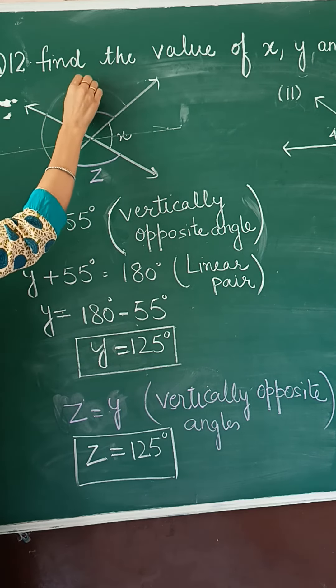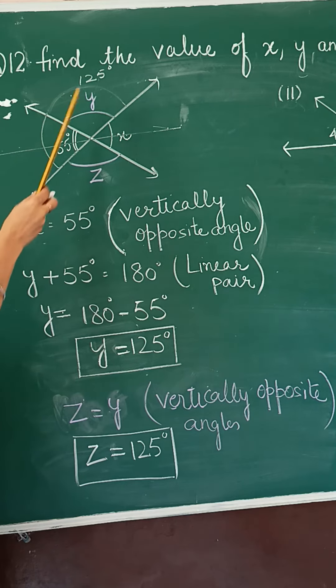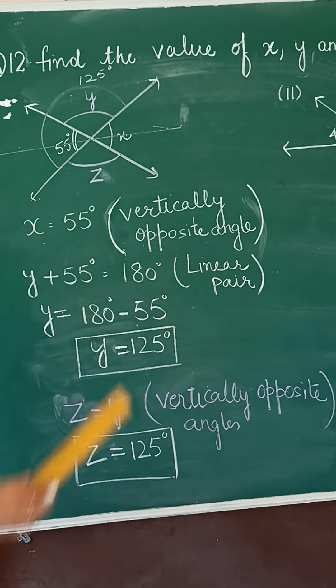Now we get this angle is 125 degree. Now, opposite to this y, what we have? Opposite to y, we have z. So z is equal to y, vertical opposite angle. So z is also 125 degree.